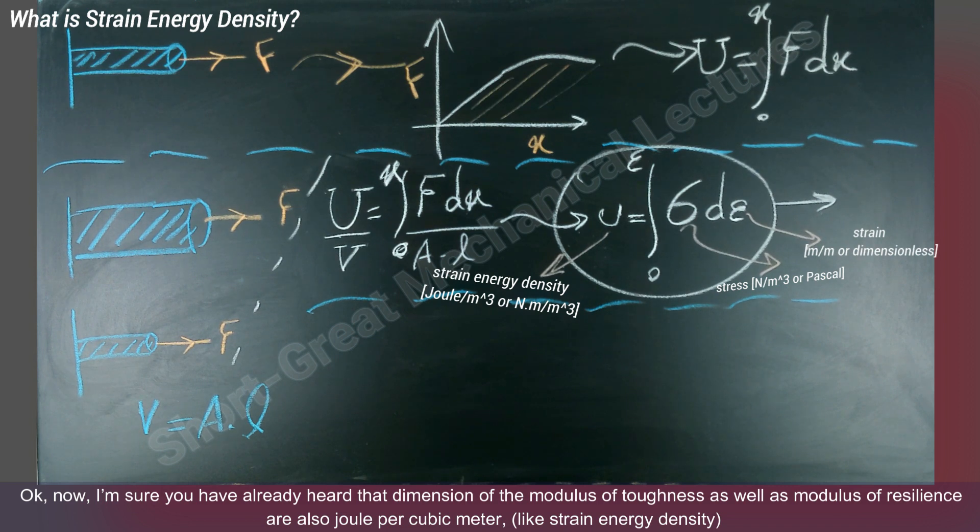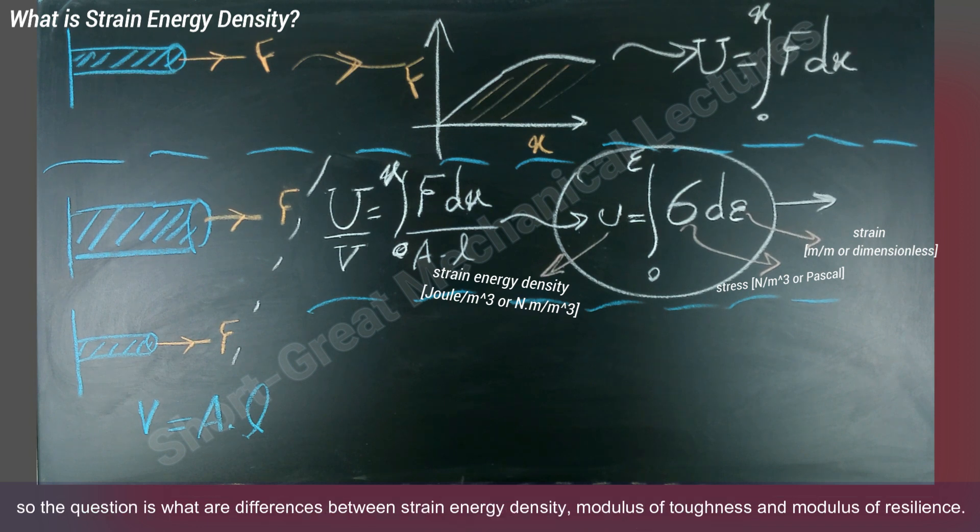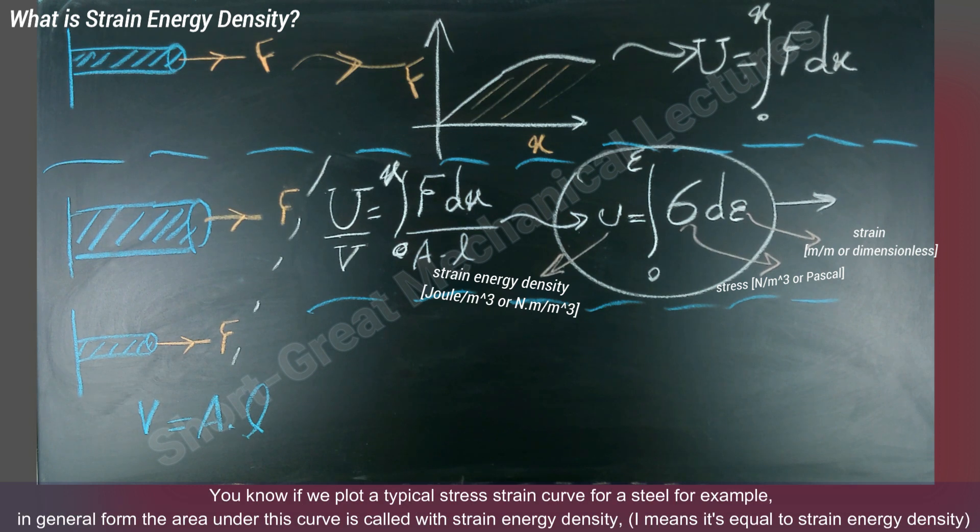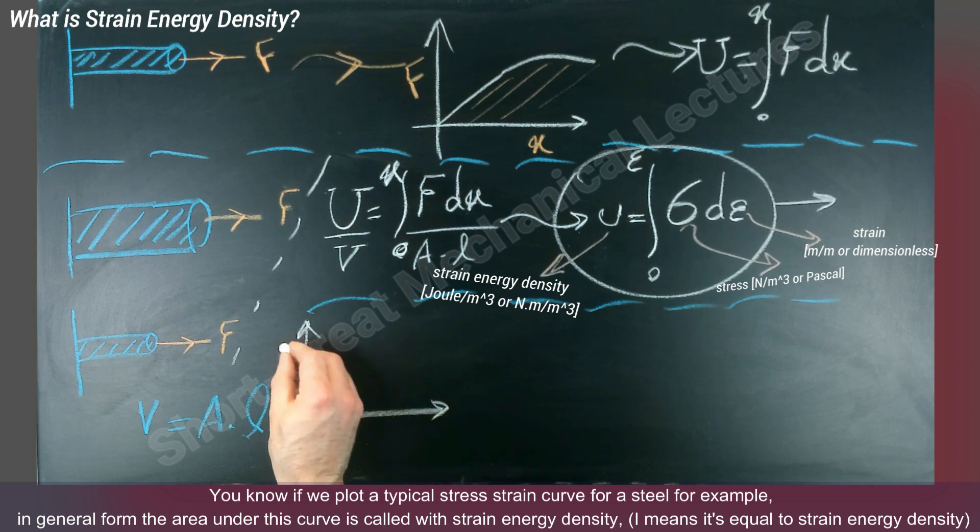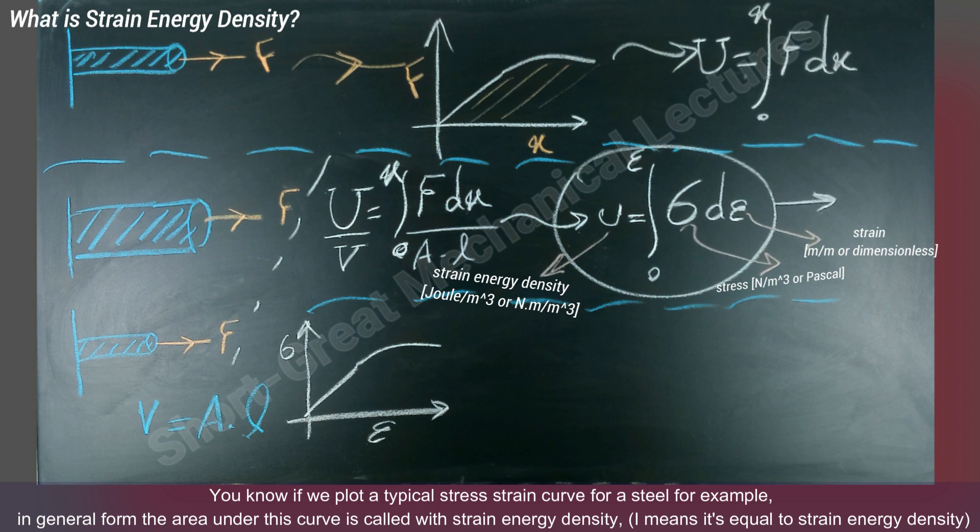So the question is, what are the differences between strain energy density, modulus of toughness, and modulus of resilience? If we plot a typical stress-strain curve for a steel, for example, in general form, the area under this curve is called strain energy density.